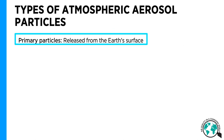Based on their origin, atmospheric aerosol particles can be classified in two different ways. We can say that the particles are natural or anthropogenic, if they are related to human activities in any way. Or we can say that the particles are primary or secondary. Primary particles are emitted into the atmosphere in a particulate form. I will now show a few examples of primary particles, but there are more than those shown here.